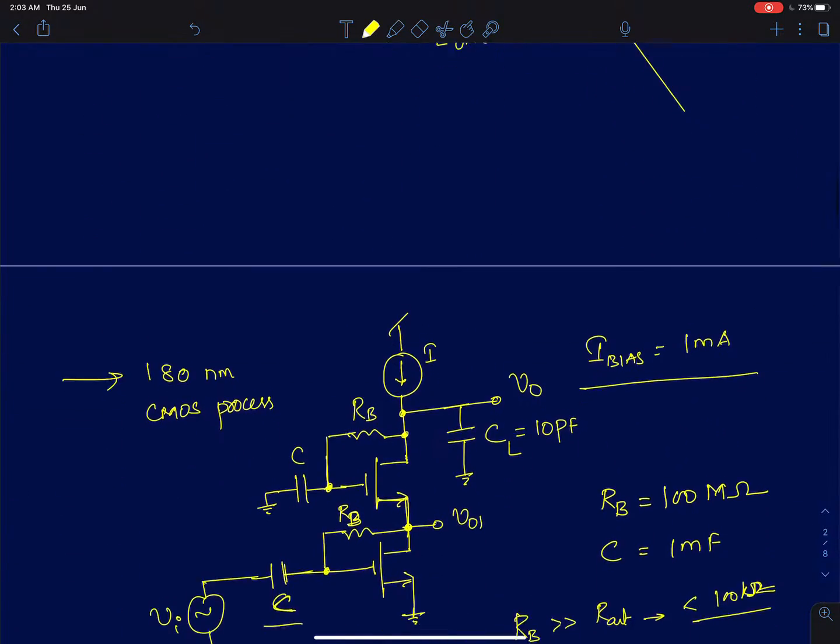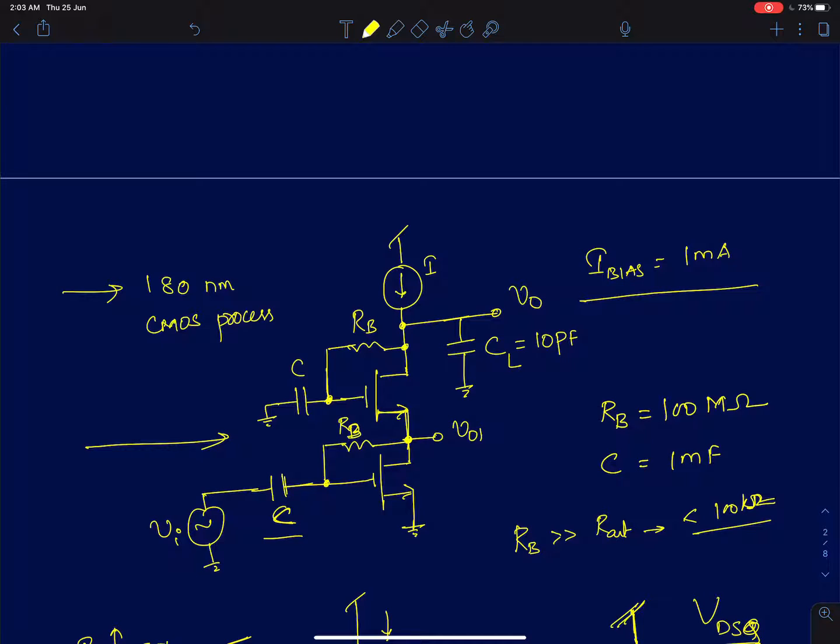To simulate this I have used a test bench which is shown here and these MOS devices are from 180 nanometer CMOS process, UMC 180 nanometer CMOS process. The value of these bias resistors RB is close to 100 mega ohms and the value of the capacitor is 1 milli Farad. The capacitor is really unreasonably large but I chose so that they don't interfere with the simulation results. At the frequencies of interest these capacitors will look like short circuit.